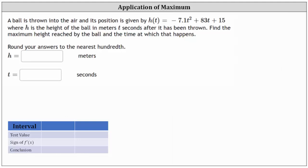Let's begin by determining h prime of t. h prime of t is equal to the derivative of negative 7.1 t squared plus 83 t plus 15 with respect to t, which is negative 14.2 t plus 83.